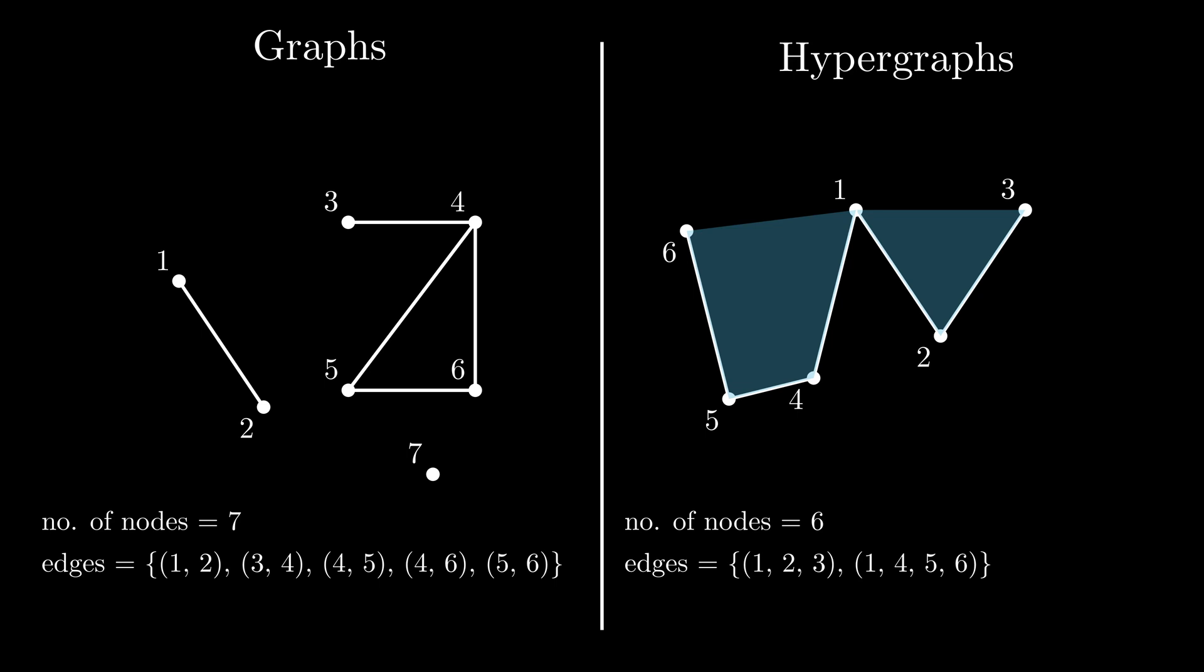This is why it is preferred the algebraic representation, thus specifying how many nodes are in the hypergraph and the set of edges. In our case, we have 6 nodes and 2 edges, one of size 3 and one of size 4.